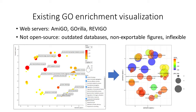Therefore we decided to create GoFigure, which is modeled after the methodology of Revigo, but instead we make it local software — not web server based. We add some flexibility, because what I would like in a scientific figure is not necessarily what other people would like. Importantly, we make it open source so that the user can update the data themselves, and can even edit the code if they want to add functionality.